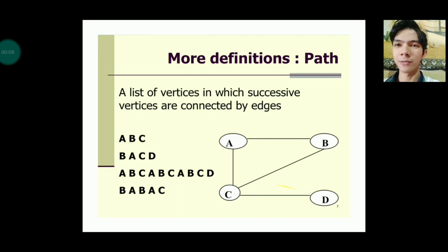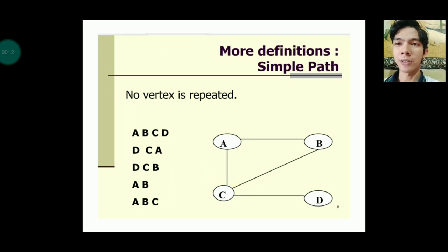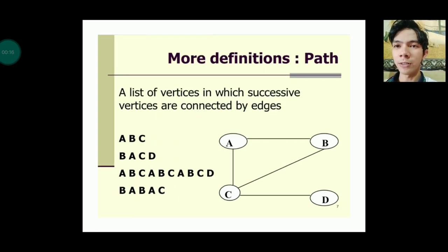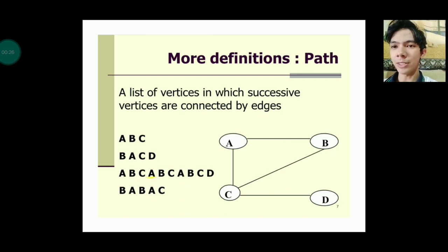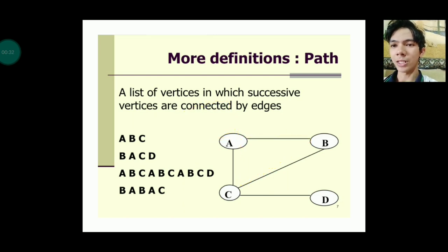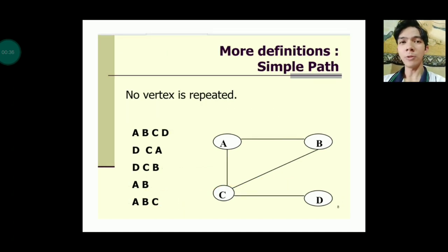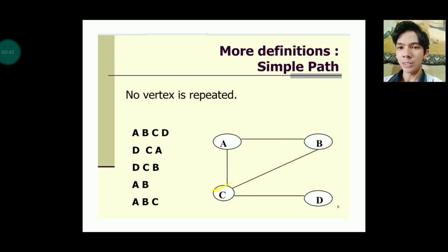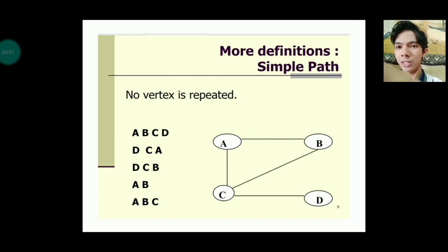In more definitions of paths, a simple path is one where no vertex is repeated — for example, a, b, c, d. In contrast, a regular path like a, b, c, a, b, c has repeated vertices. A simple path such as a, b, c, d or d, c, b, a follows a single non-repeated sequence of vertices.